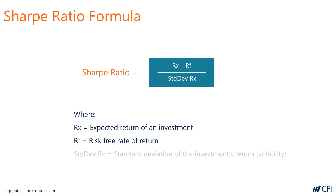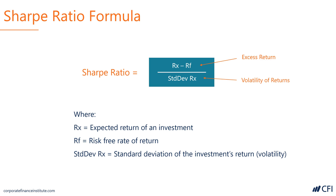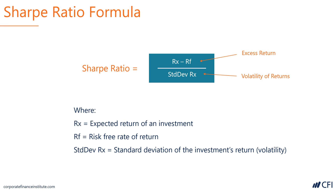We have the return of an investment relative to the risk-free rate of return on the numerator. This is referred to as the excess return. Then on the denominator we have the standard deviation of the investment's return, which is its volatility. By comparing the excess return of the investment to the volatility of the investment, we arrive at the Sharpe Ratio number.